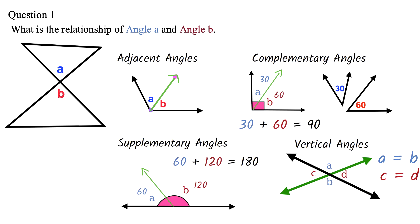So back to our question. This should be easy now. We can see that the angle A and angle B are vertical angles.